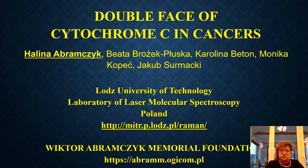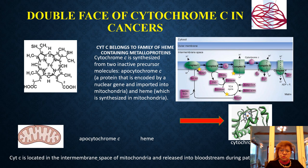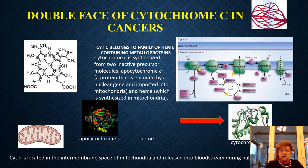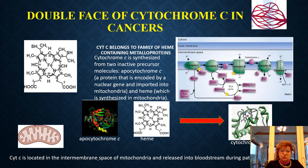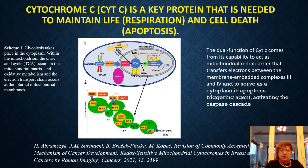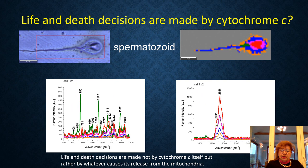We would like to show this dual role of cytochrome C. As we know, cytochrome C belongs to the family of heme-containing metalloproteins. Cytochrome C is synthesized from two inactive precursor molecules: apocytochrome C, a protein encoded by a nuclear gene and imported into mitochondria, and heme, which is synthesized in mitochondria. Cytochrome C is located in the intermembrane space of mitochondria and is released into the bloodstream during pathology.